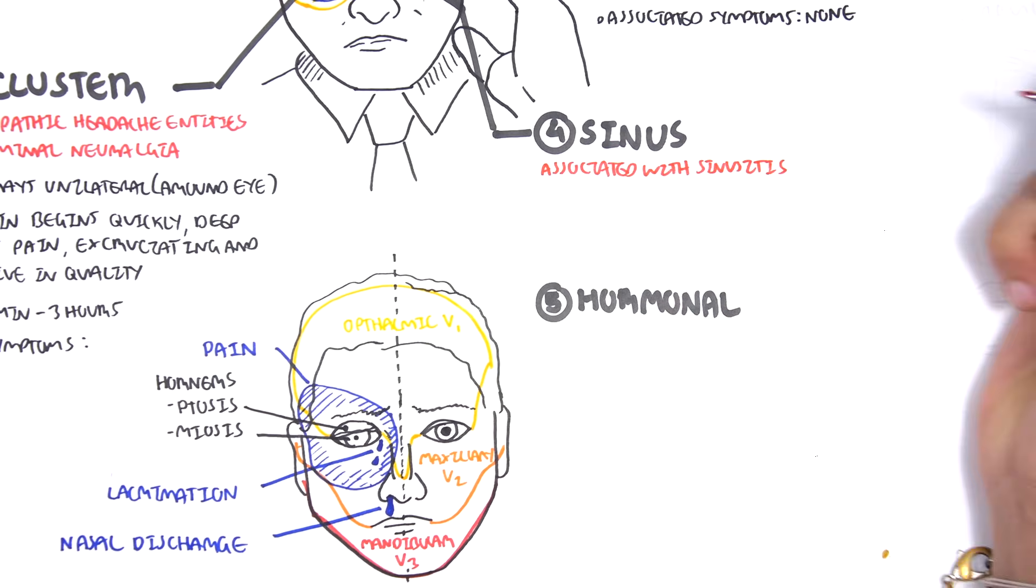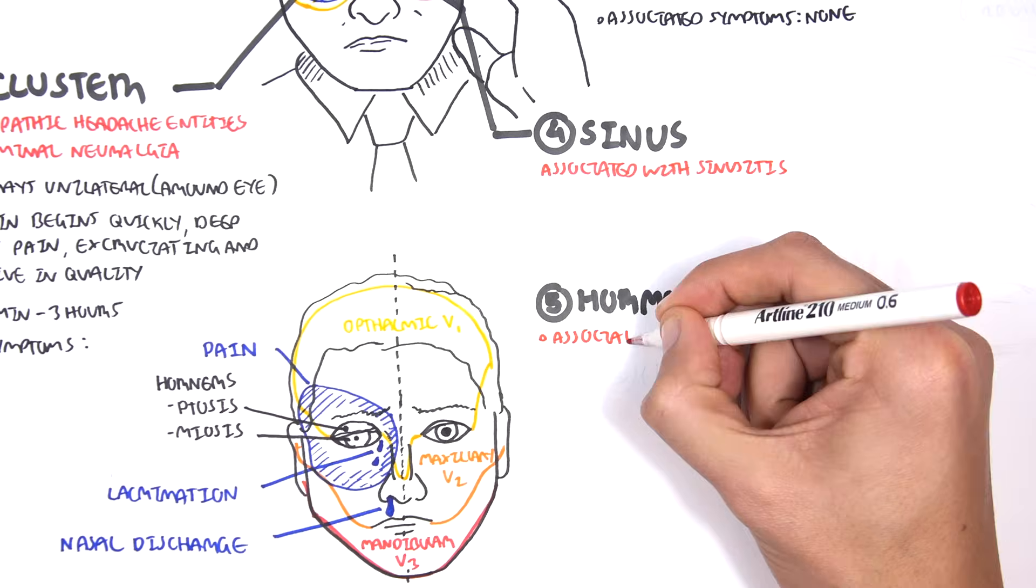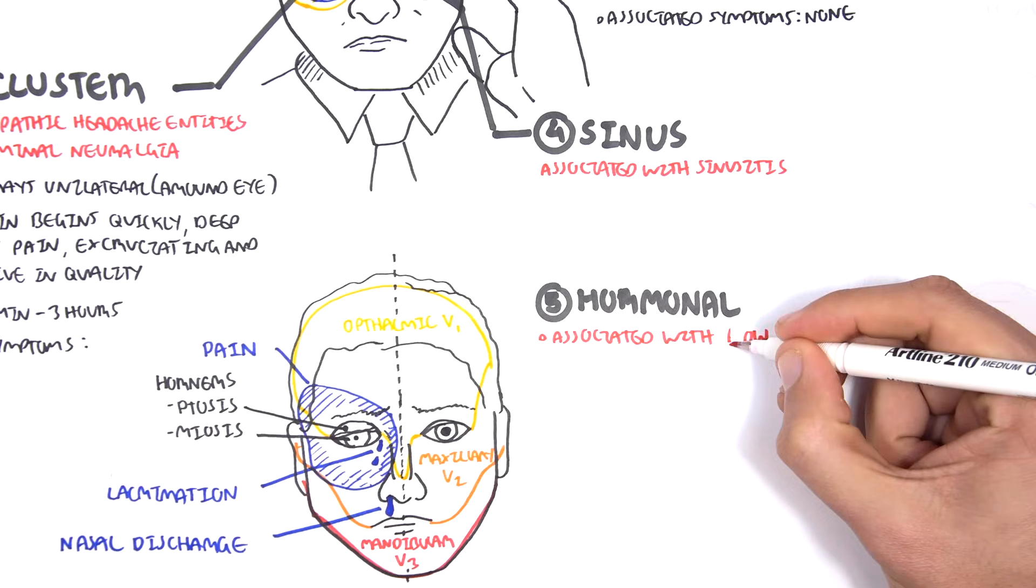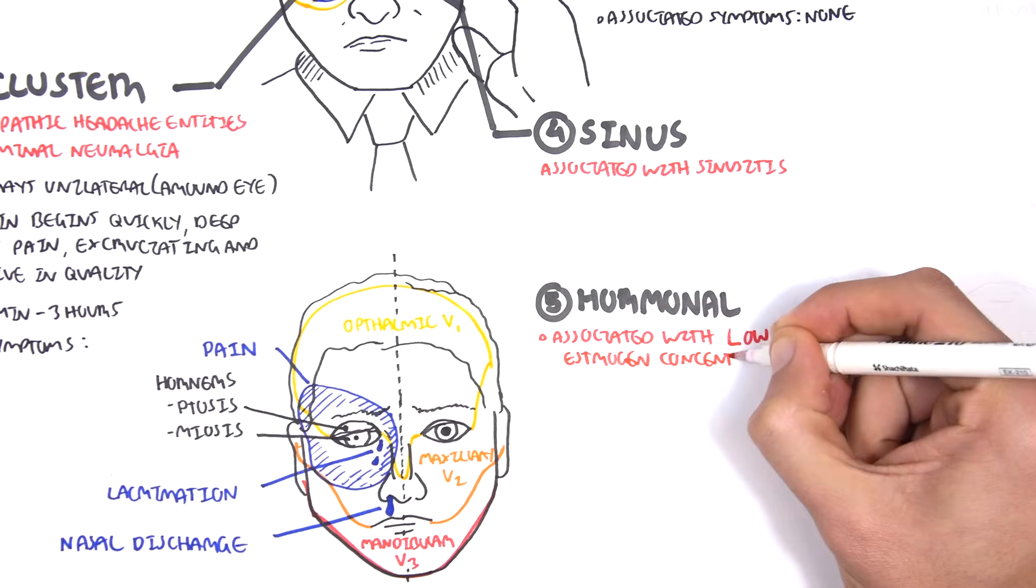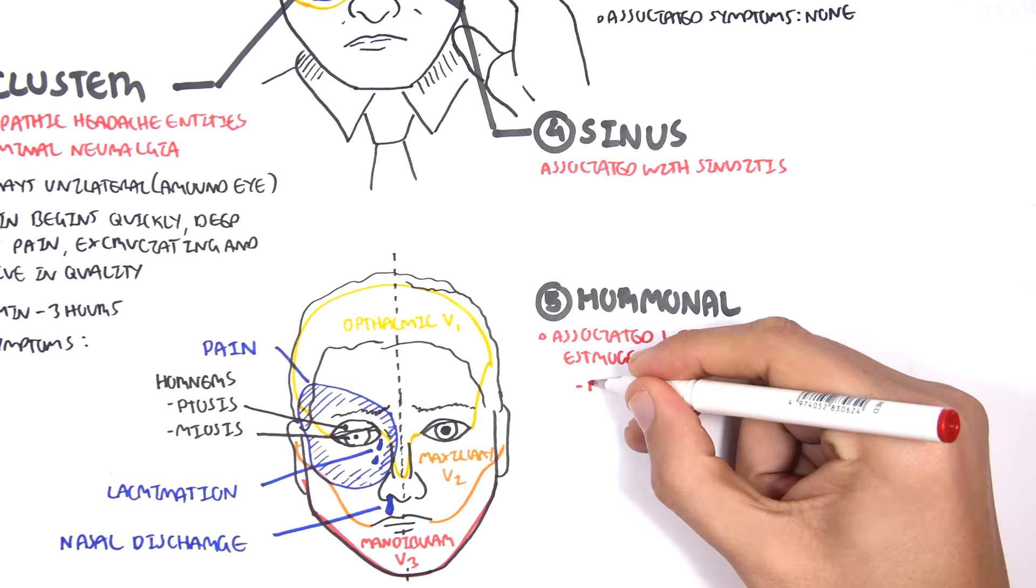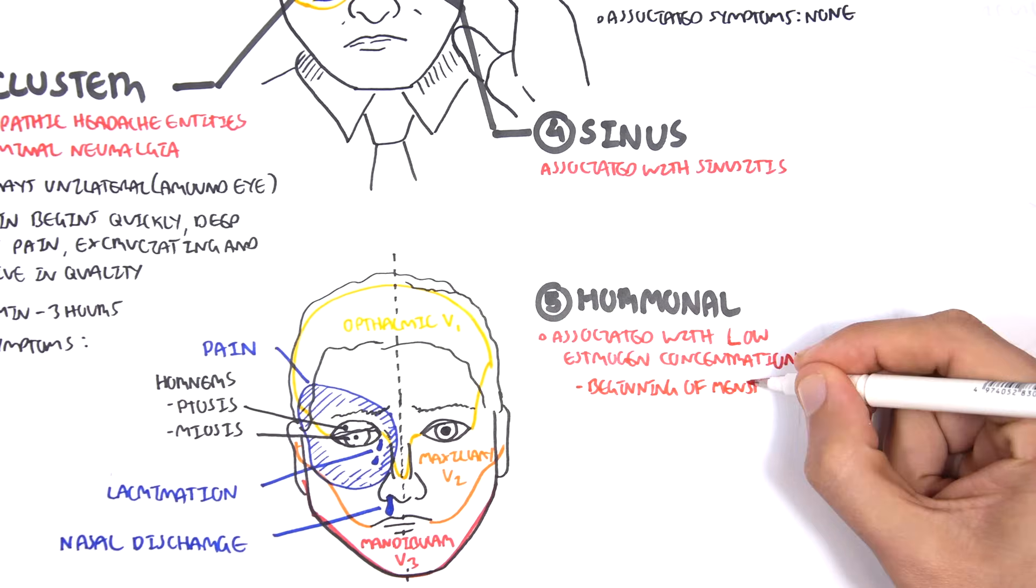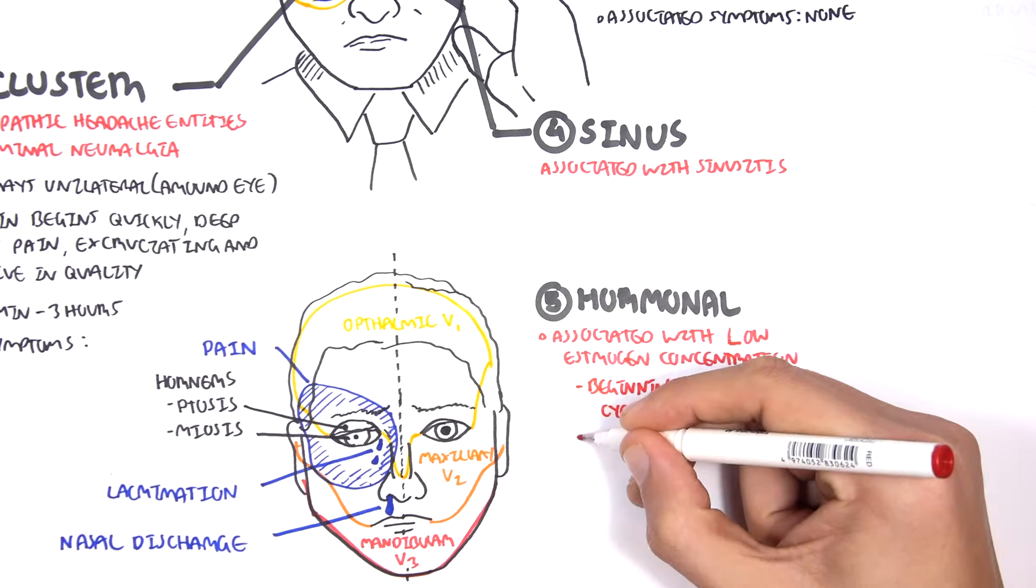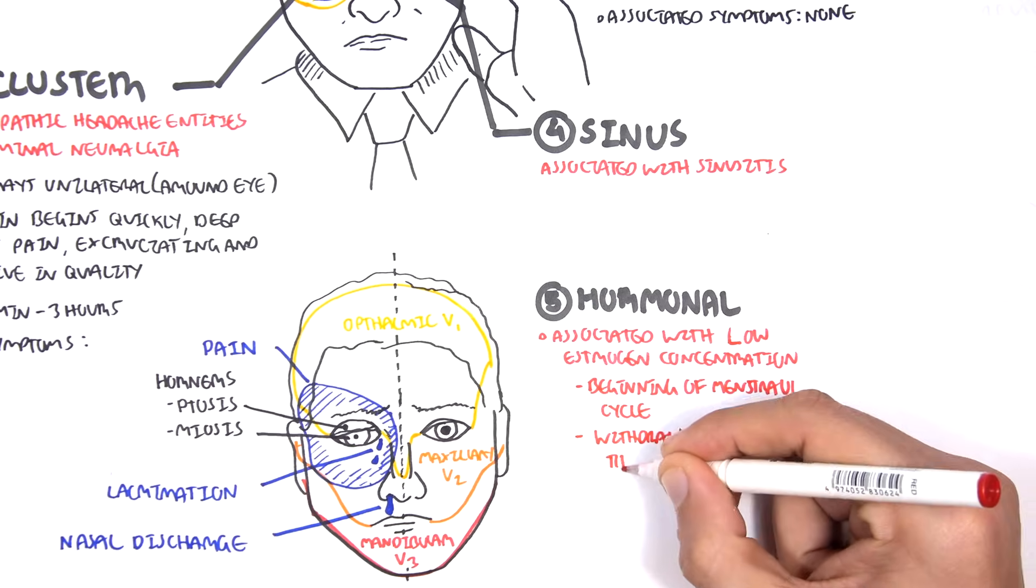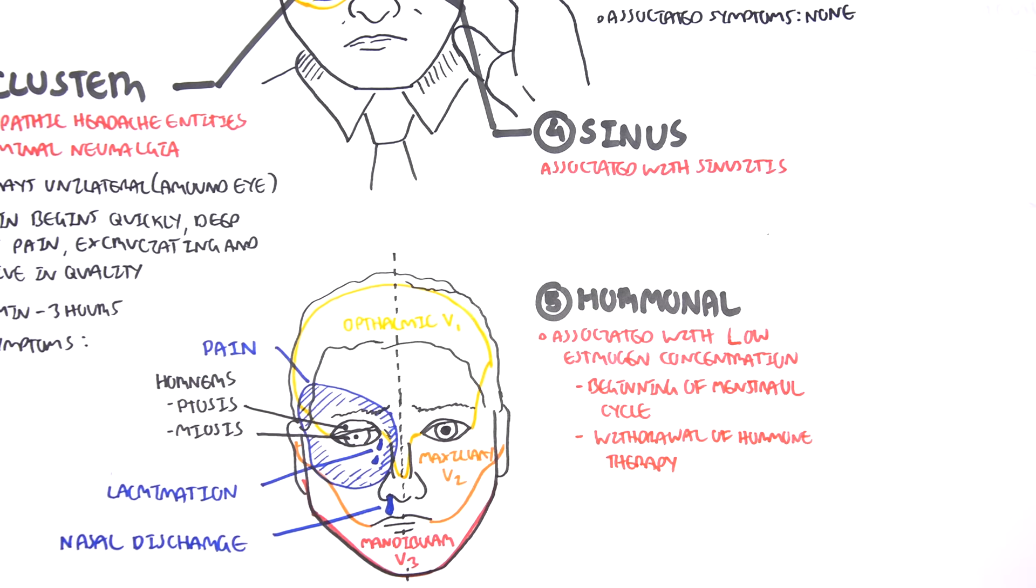Then you have sinus headaches, which are associated with sinusitis. Then you have hormonal headaches as well. Hormonal headaches are essentially when changes in your hormone levels cause the headache. It can be associated with low estrogen concentration, for example, at the beginning of the menstrual cycle, or withdrawal of hormone therapy. Estrogen levels drop, you get this headache.